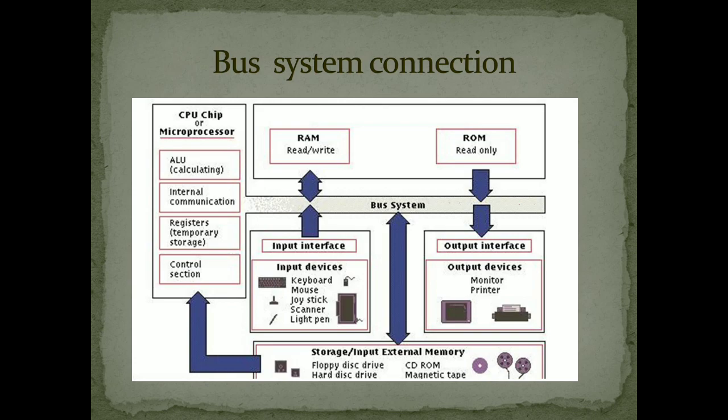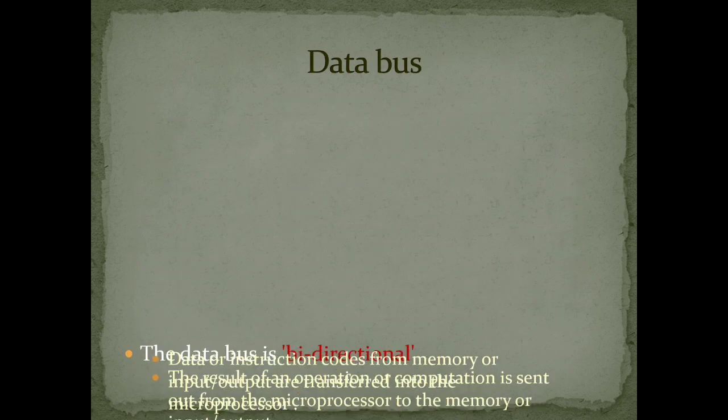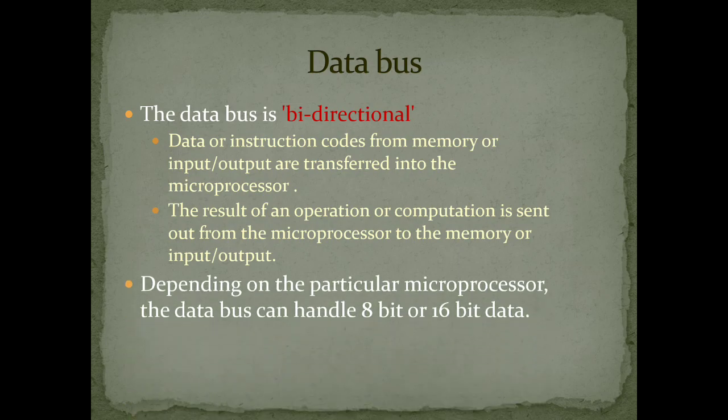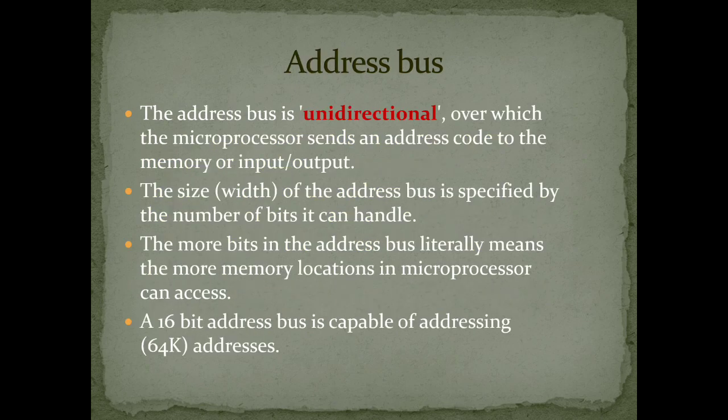First, the data bus. The data bus is a bi-directional bus — you can both send and receive data. For example, you send input data, and once it is manipulated, it sends back the output as informational data. That is called the data bus. Bi-directional means two-way communication. It can handle 8-bit or 16-bit data.